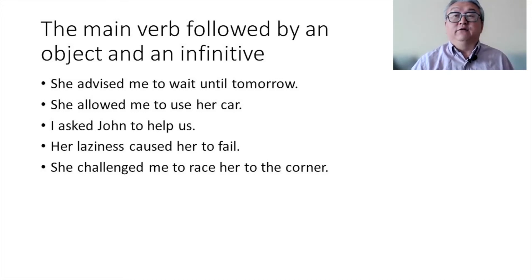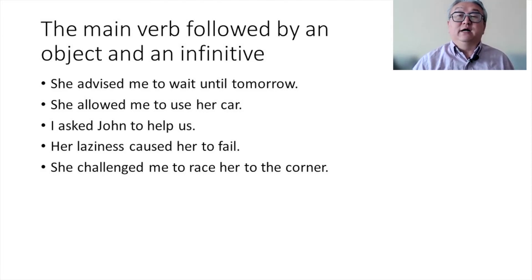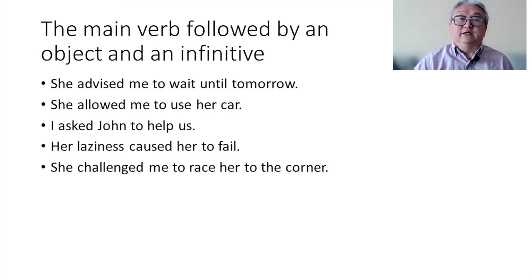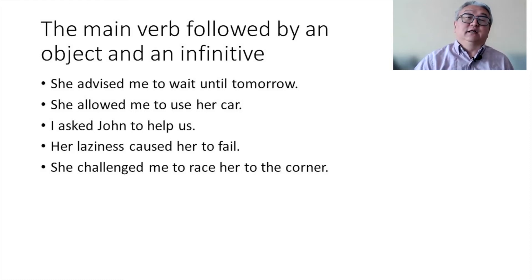This is the main verb group followed by an object and then an infinitive. So: she advised me to wait, she allowed me to use her car. When you memorize these, you memorize 'advise somebody to do something,' 'allow somebody to do something.' You're not memorizing single words — you're memorizing how they are used together. This is the second group.